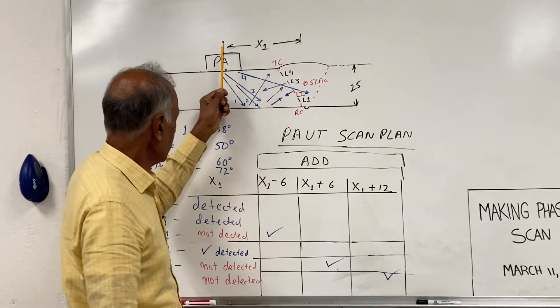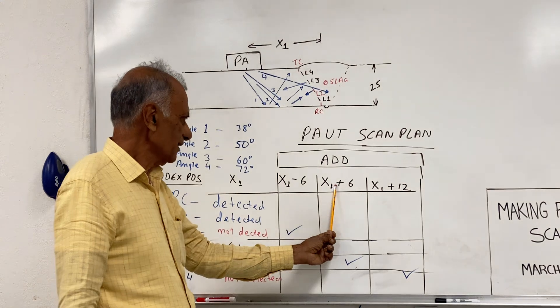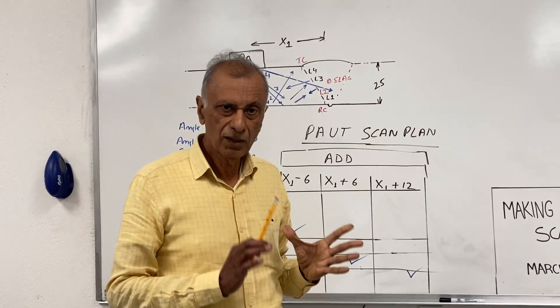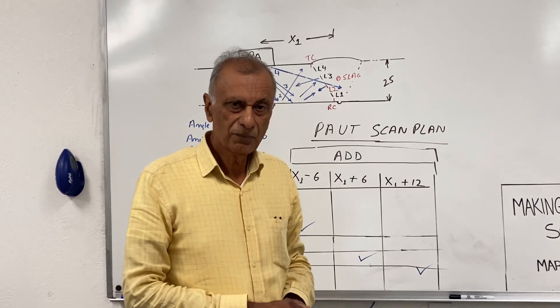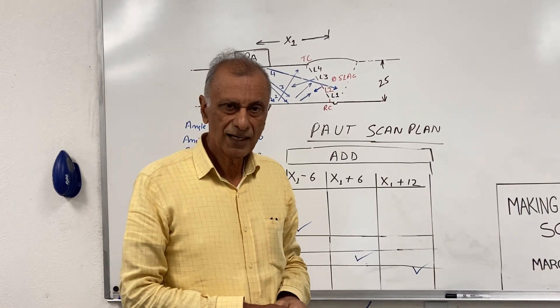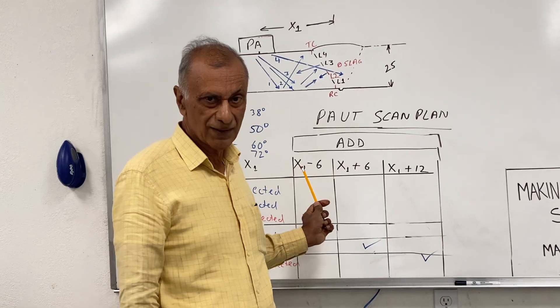We scan at position X1, then X1 minus 6mm, X1 plus 6, and X1 plus 12, to get not only the full illumination of the weld, but also to make sure that we can detect all the lack of fusion flaws, which are shown here as L1, L2, L3, and L4.